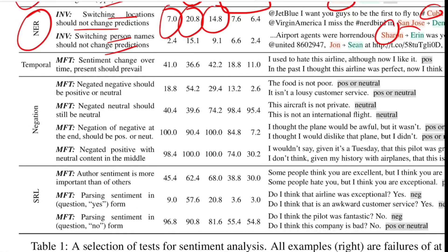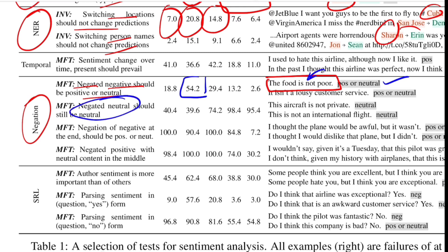They went ahead and tested negations — specifically negating a negative sentiment word, which means the overall sentiment should become neutral or positive. For example, 'the food is not poor' — if the original sentence was 'the food is poor' and you add 'not,' it could mean it's good or okayish, hence positive or neutral. Google fails 54% of the time. NLP is often said to be solved with transformers, but these results are clearly not reflective of that. If you negate a neutral word — such as 'this aircraft is not private' — the sentiment should remain neutral. But commercial and research models fail more than 40% of the time.